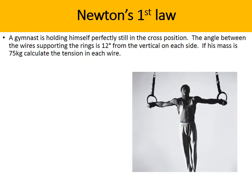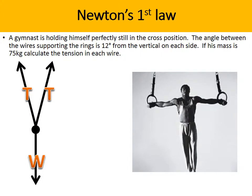So here's the solution. First thing, you draw your free body force diagram, and we have the tension in his arms and the ropes, acting at an angle of 12 degrees, and then weight acting down the way. Now, the gymnast is stationary, so the resultant force in horizontal and vertical planes is zero. He's not moving.